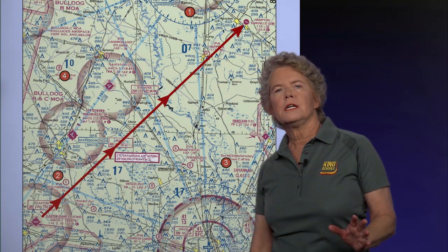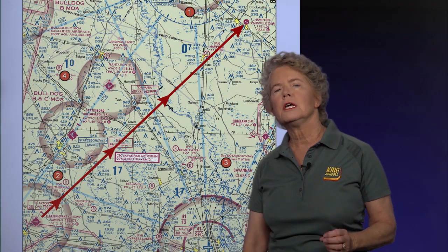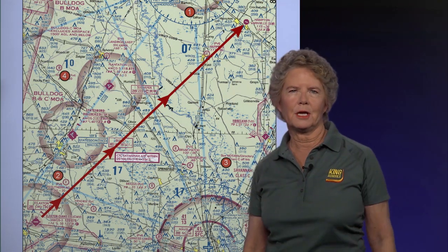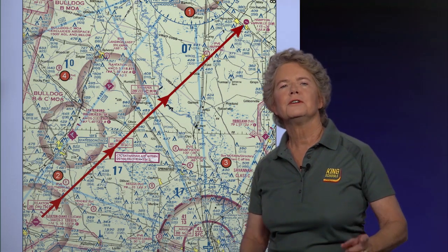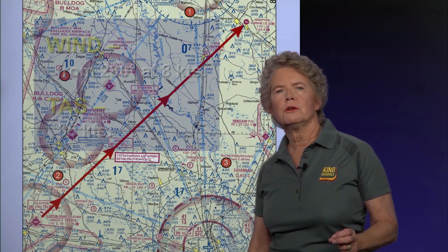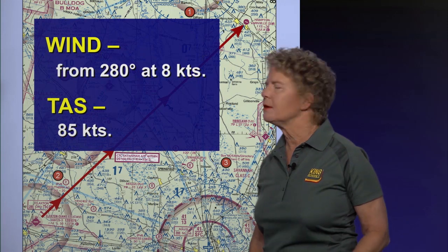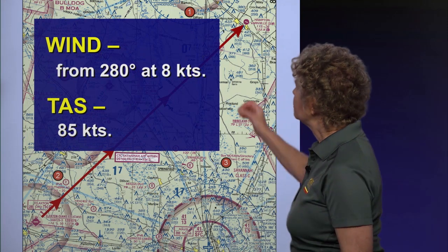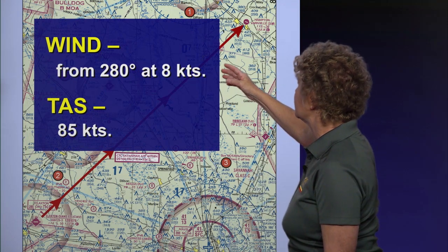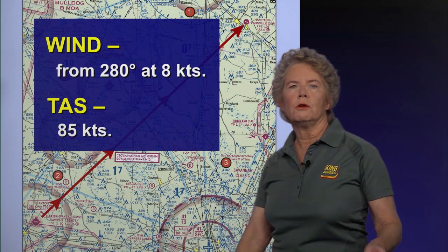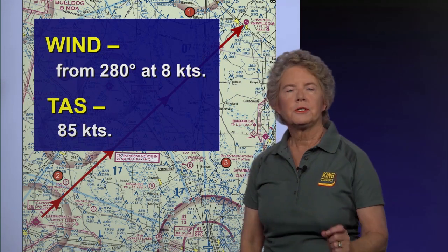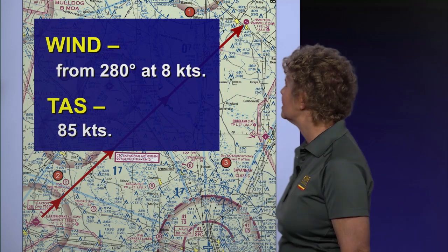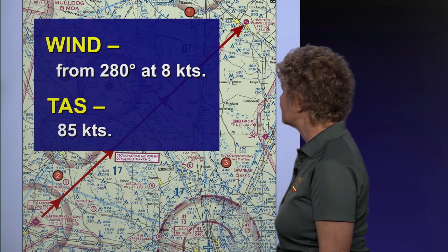In addition to your departure and destination airports, you need some additional information. Part of what you need to know is the wind. So let's assume the wind on that trip will be from 280 degrees at 8 knots. You also need to know your true airspeed. So let's assume your true airspeed is 85 knots.